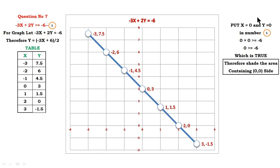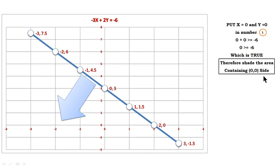Now insert x = 0 and y = 0 into the original inequality. We get 0 greater than or equal to minus 6, which is true. Therefore, shade the region containing (0, 0). It means you shade below this line.